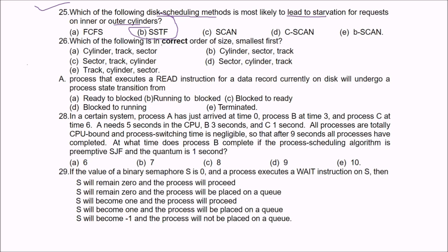Question 26: Which is the correct order of size, smallest first? The answer is C. A sector is the smallest unit, then a track (which contains multiple sectors), and then a cylinder. So the correct order from smallest to largest is: sector, track, cylinder.